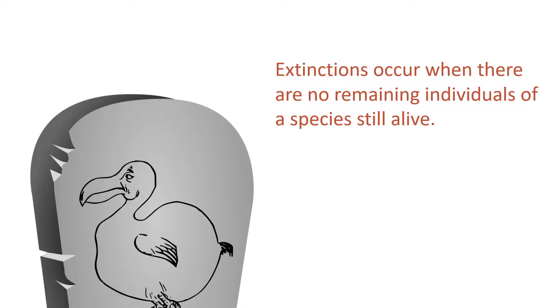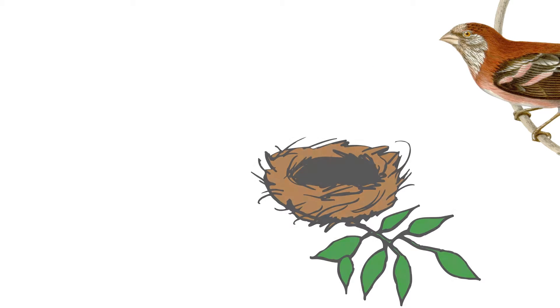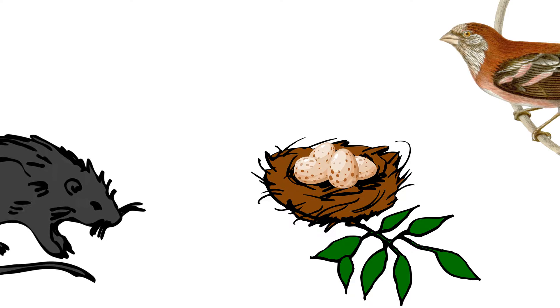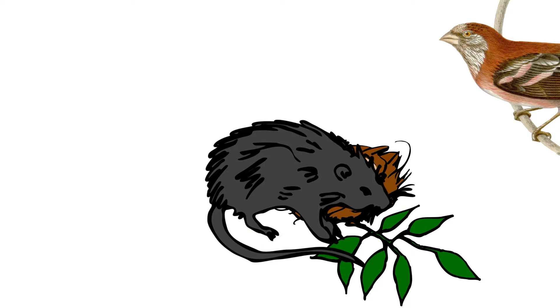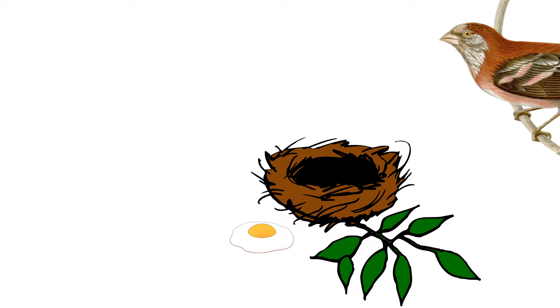Extinctions occur when there are no remaining individuals of a species still alive. There are a range of reasons why extinctions can occur. New predators may appear, such as rats brought onto islands by humans. The rats feed on the eggs of ground nesting birds and have caused a decline in many bird species.